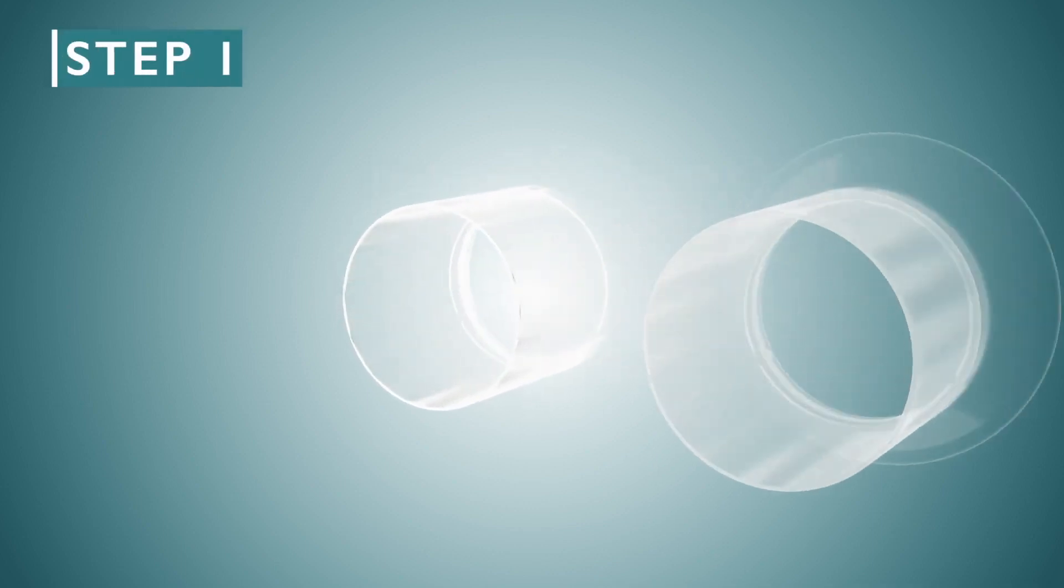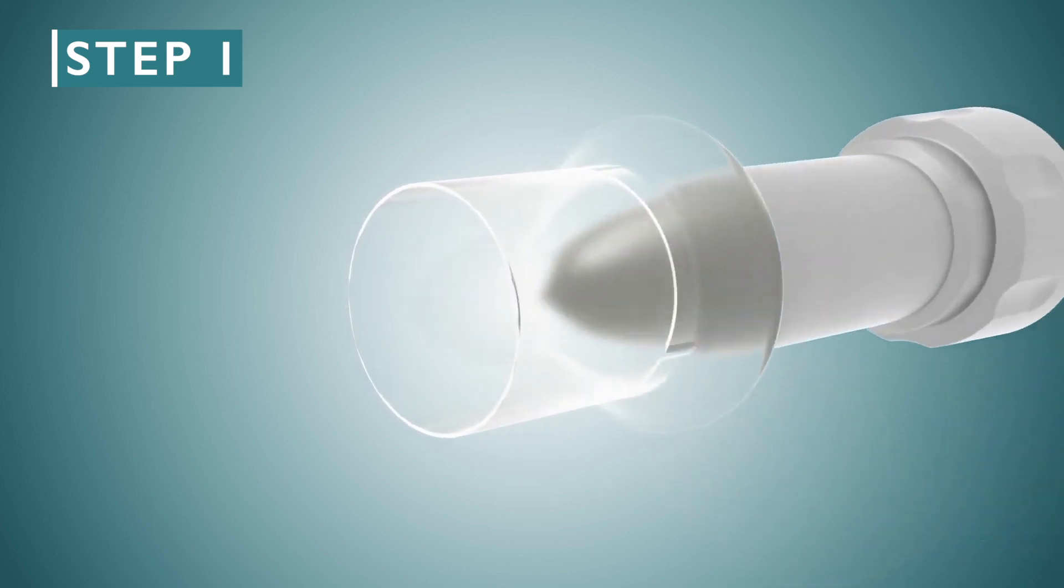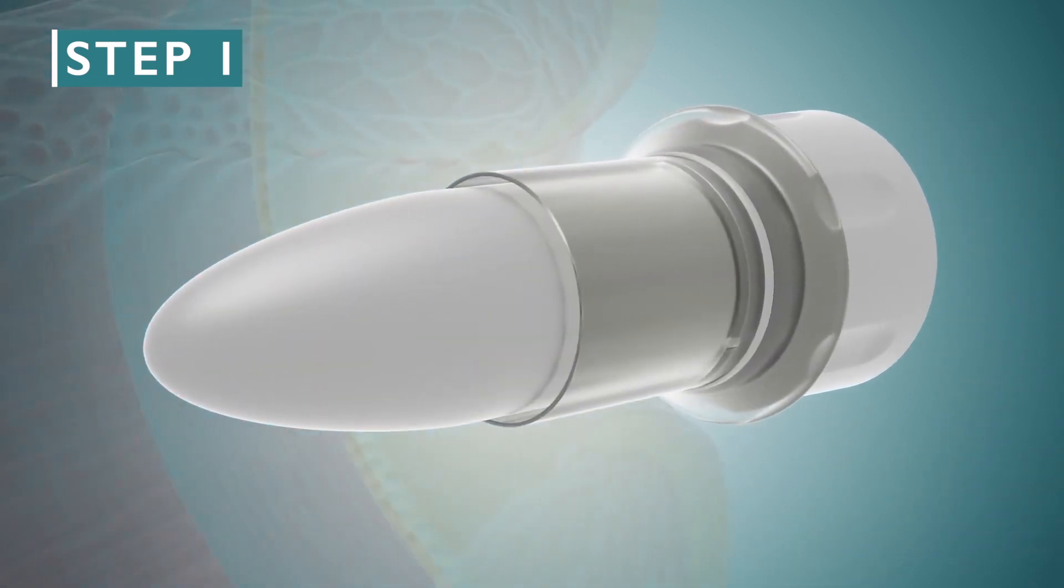Step 1. Slowly and gradually introduce the lubricated trocar and sleeve into the anus.